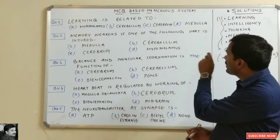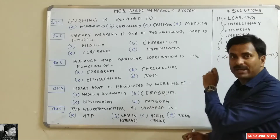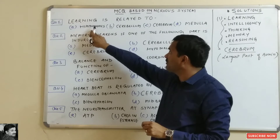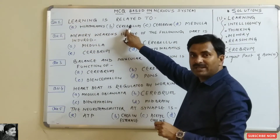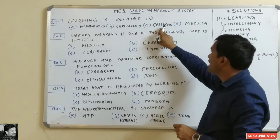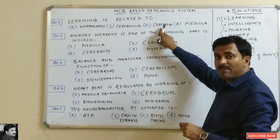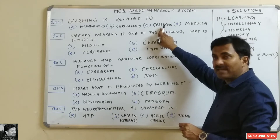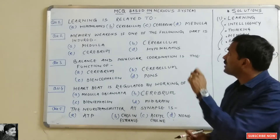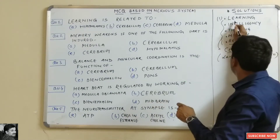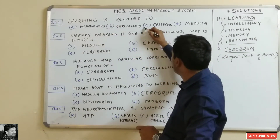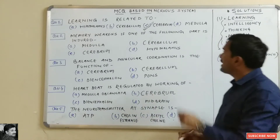The options are: hypothalamus, cerebellum, cerebrum, or medulla oblongata. Hypothalamus is the thermoregulator of the body; cerebellum maintains posture and balance; medulla oblongata controls involuntary actions. Learning is related to the cerebrum, so option C is correct.